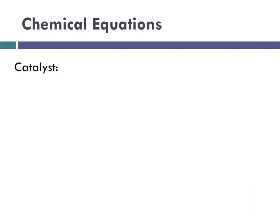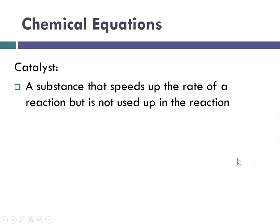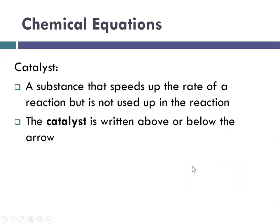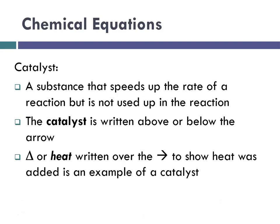So we also need to talk about catalysts. You learned about those a little bit in biology class. So a substance that speeds up the rate of a reaction but is not used up in the reaction is a catalyst. And we write the catalyst either above or below the arrow in a chemical equation. And one that comes up a lot is the delta sign for heat, which is again written over the arrow to show that heat was added, and it's an example of a catalyst that speeds up the rate of the reaction.